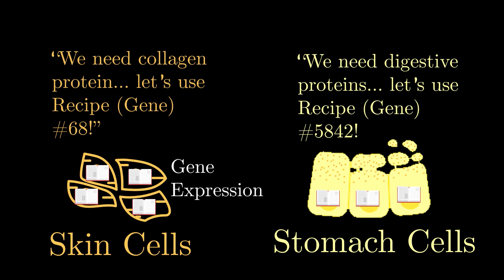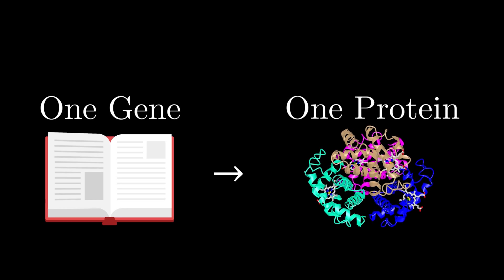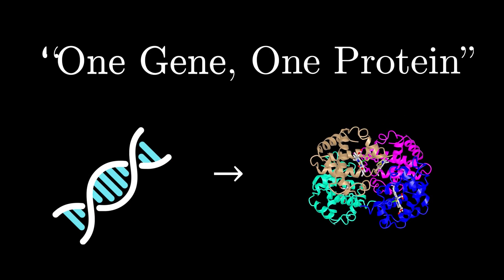The act of a cell using a specific gene to make a protein is what scientists call gene expression. And the act of a cell controlling which genes to use and which not to use is referred to as gene regulation. And one more thing to keep in mind, just some food for thought. Scientists used to believe that one gene had the instructions to make exactly one protein, which they famously made into the motto, one gene, one protein.